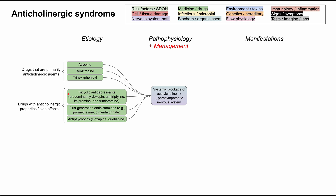For instance, tricyclic antidepressants are used to treat depression, and many of these have strong anticholinergic side effects. These include doxepin, amitriptyline, imipramine, and trimipramine.